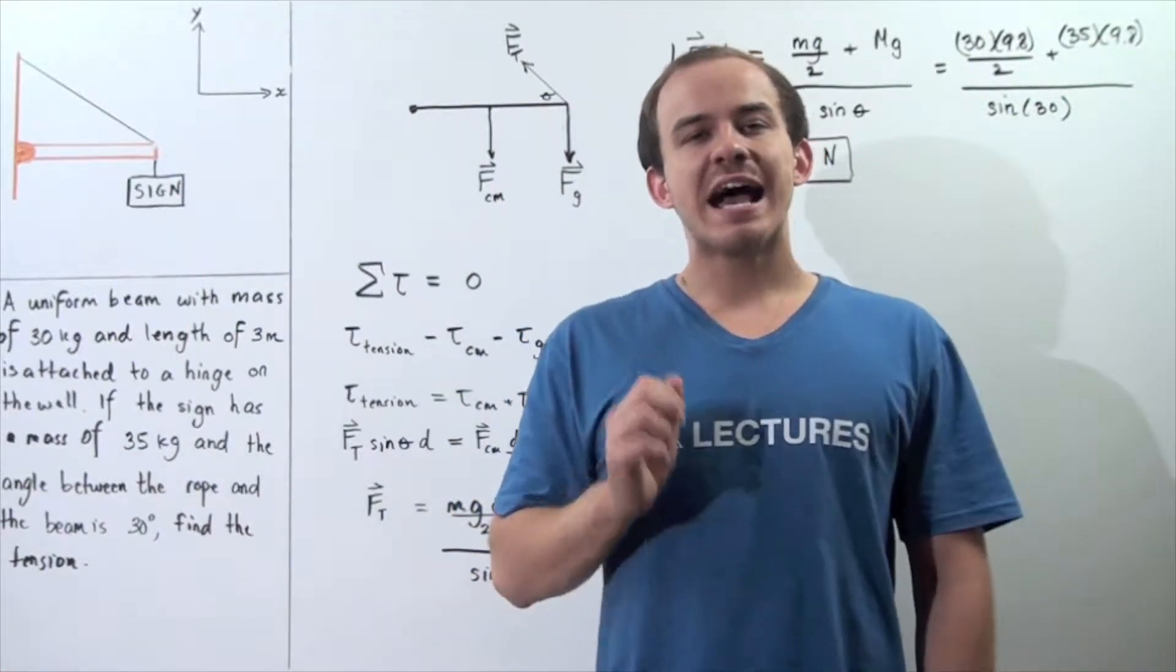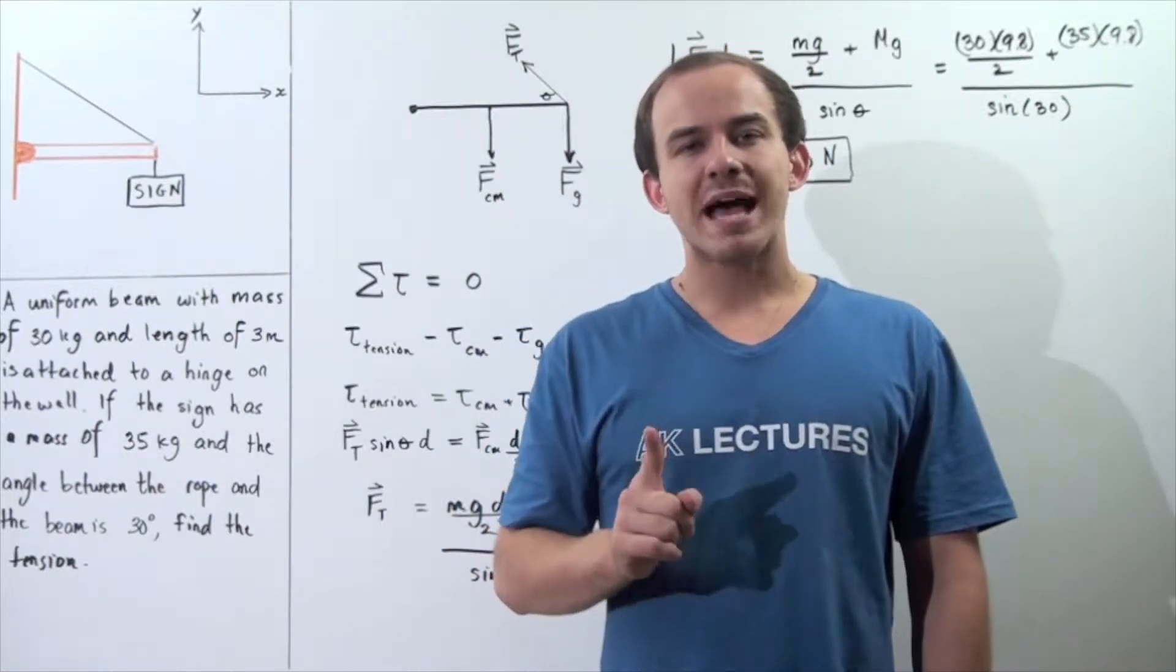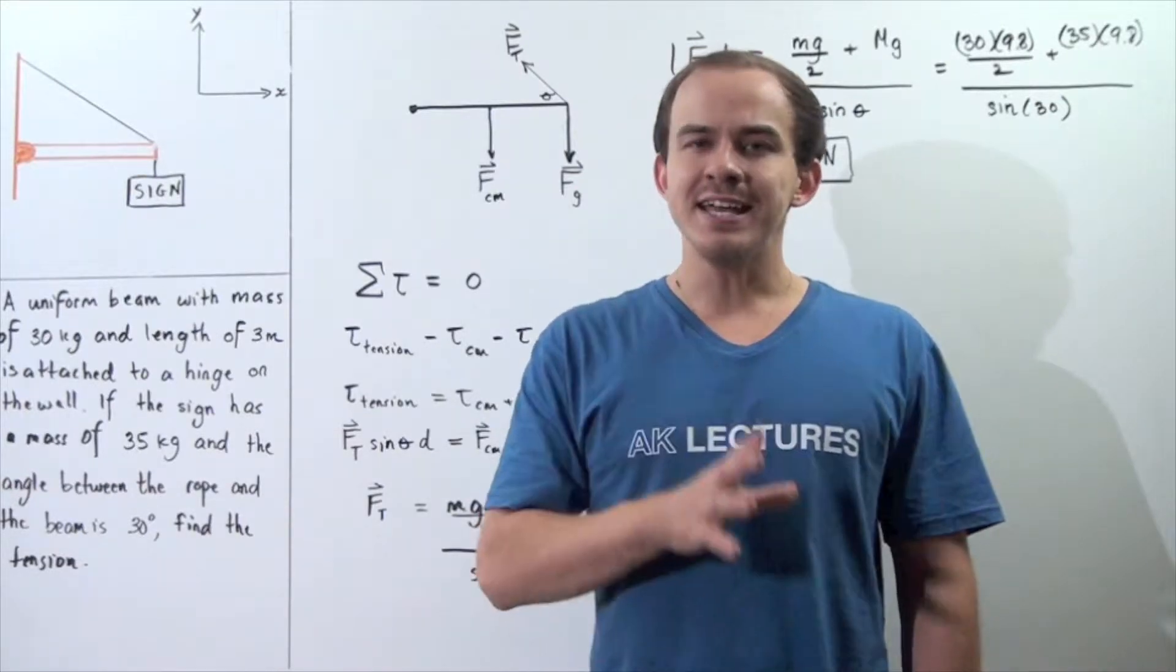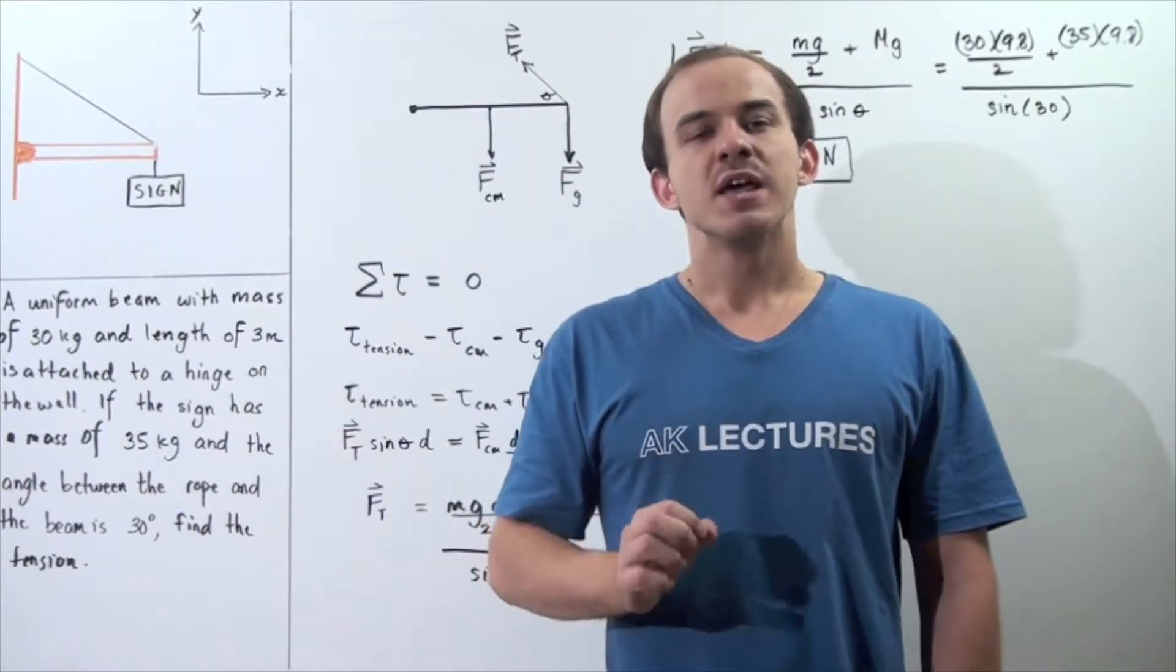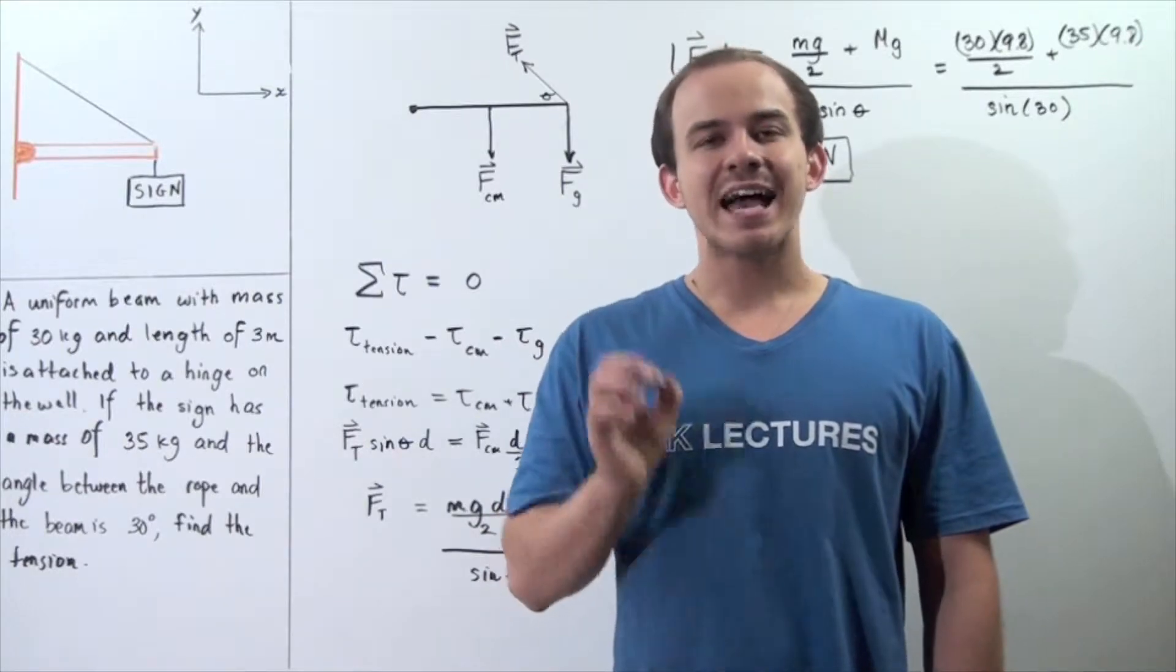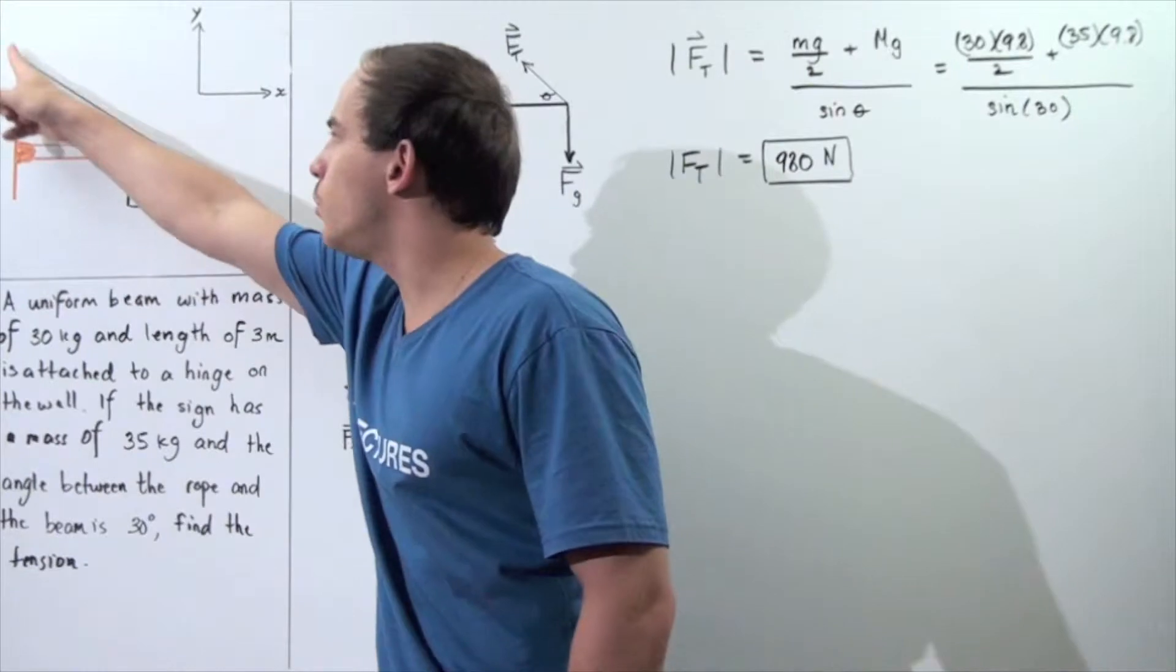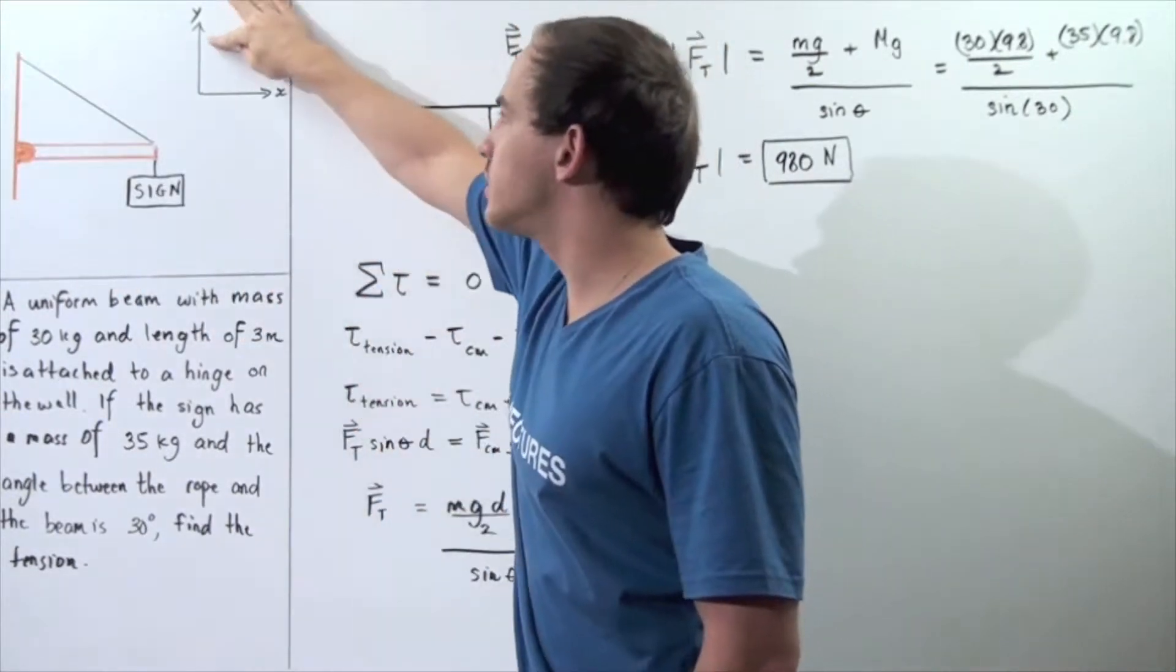Let's suppose that we have a uniform beam with mass of 30 kilograms that we attach to a hinge resting on the wall. That hinge acts as the axis of rotation of the beam. So we have the following wall that runs along the y-axis.